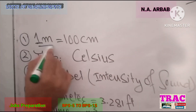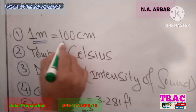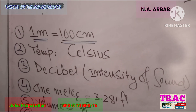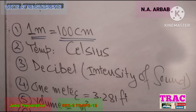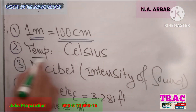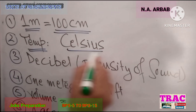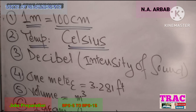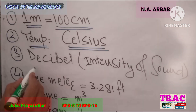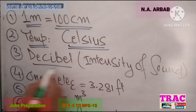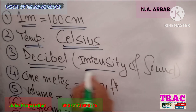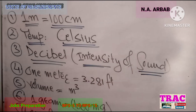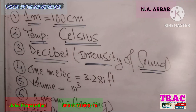Number 1: 1 meter is equal to 100 cm. Number 2: the unit of temperature is Celsius. Number 3: Decibel is the unit of intensity of sound.